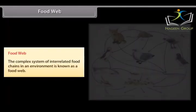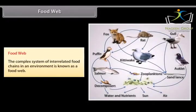The complex system of interrelated food chains in an environment is known as a food web.